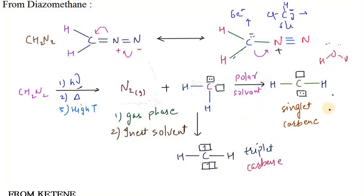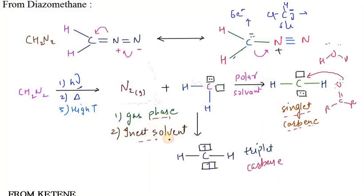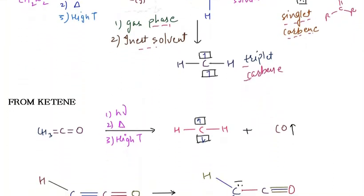Polar solvents like H2O, aldehydes, and ketones contain oxygen and other species with lone pairs that can donate to carbon's empty orbital. Whenever there is a species that can donate electrons to the carbene's empty orbital, it forms a singlet carbene. When the reaction is in the gas phase or in an inert solvent, triplet carbene forms instead. The type of carbene formed depends on the solvent condition — polar solvent gives singlet; gas phase or inert solvent gives triplet.